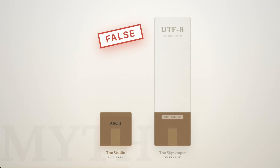Common misconception: ASCII and UTF-8 are the same thing. Nope. ASCII is just the first 128 characters of UTF-8 — like saying a studio apartment is the same as a skyscraper because they both have a front door.